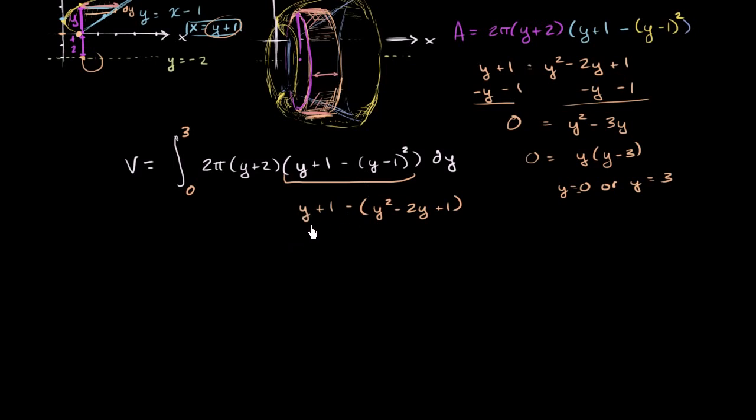That would simplify to y plus 1 minus y squared plus 2y minus 1. So this 1 and this negative 1 cancel out. And you get negative y squared plus 3y.